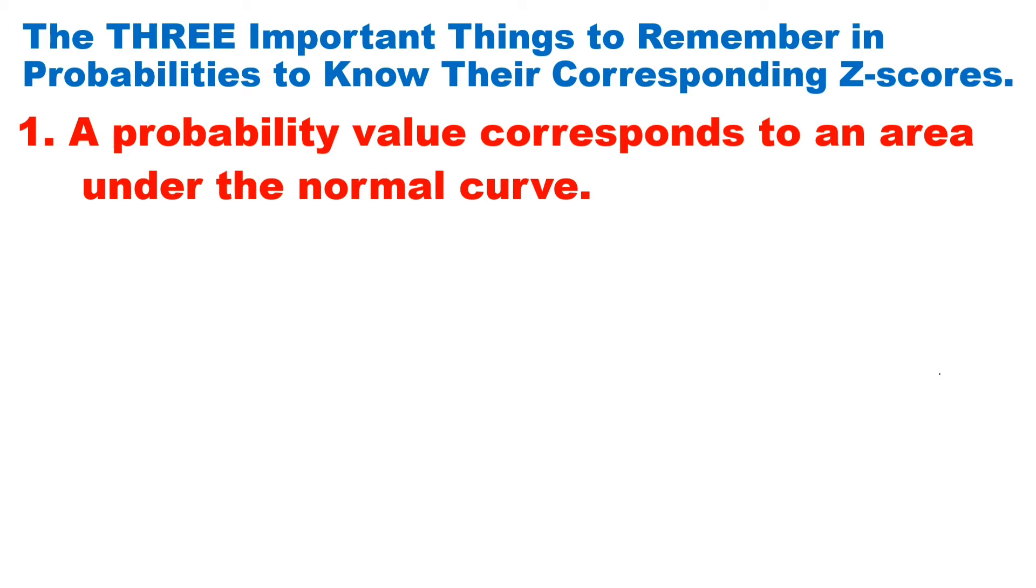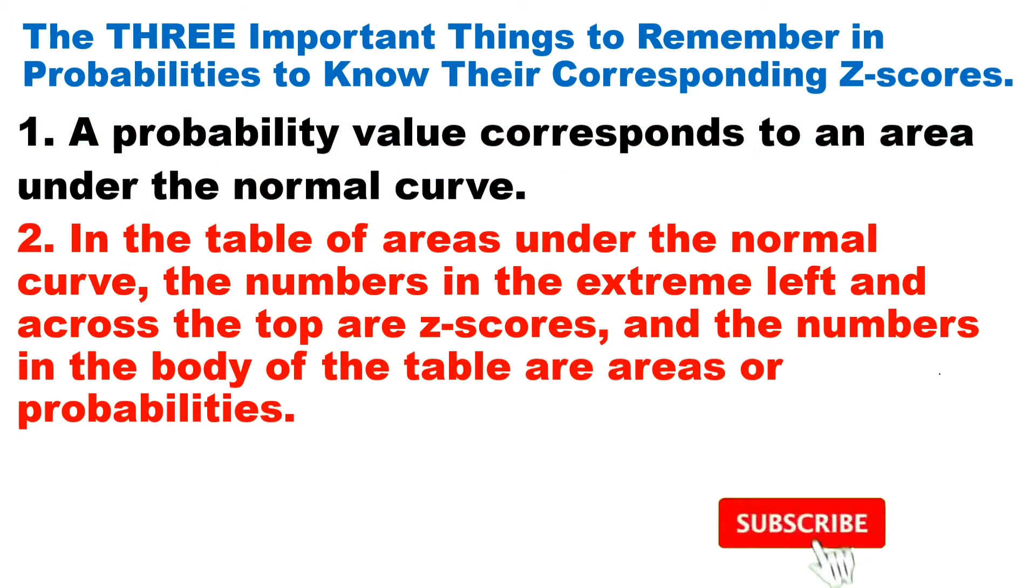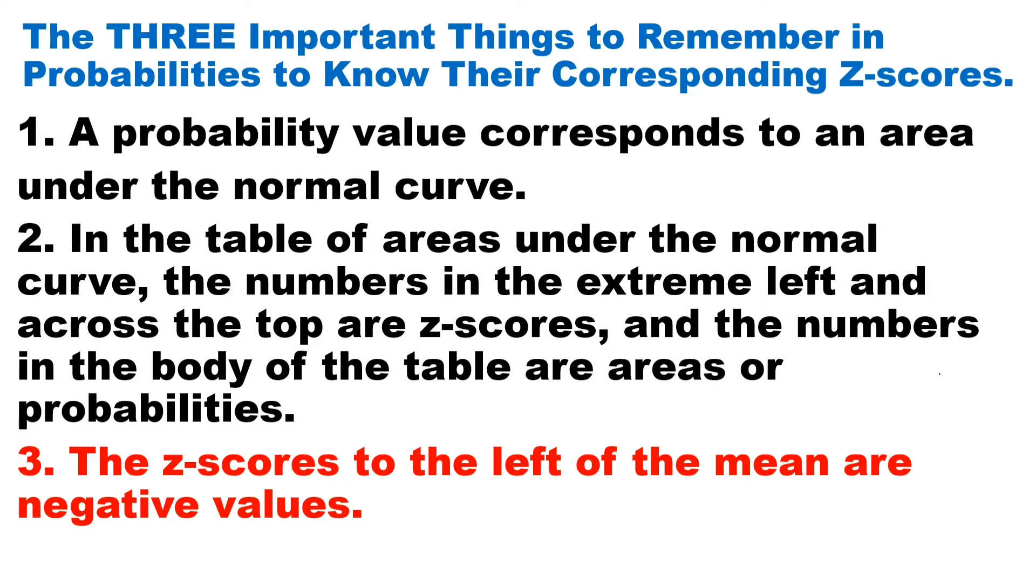We have three important things to remember in probabilities to know their corresponding Z-scores. Number one, a probability value corresponds to an area under the normal curve. Number two, in the table of areas under the normal curve, the numbers in the extreme left and across the top are Z-scores, and the numbers in the body of the table are areas or probabilities. And number three, the Z-scores to the left of the mean are negative values.